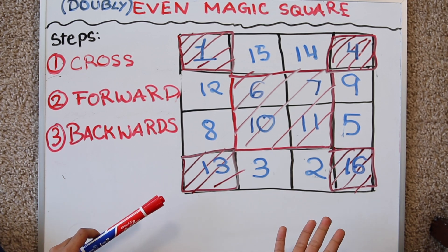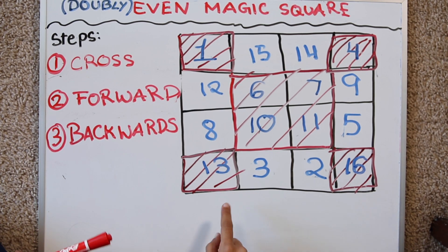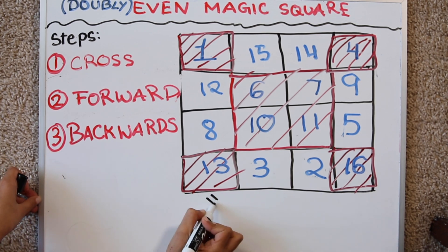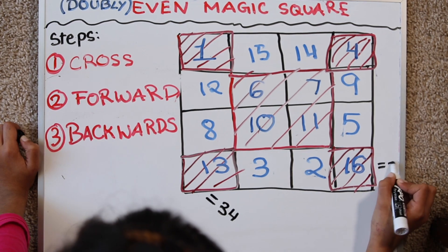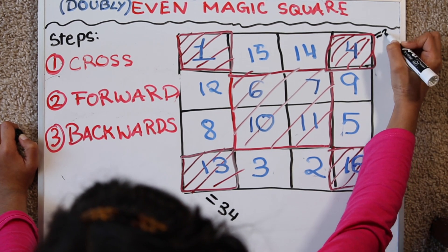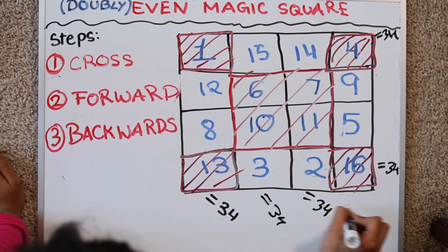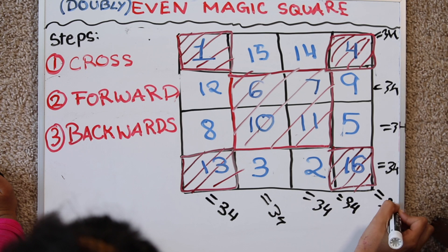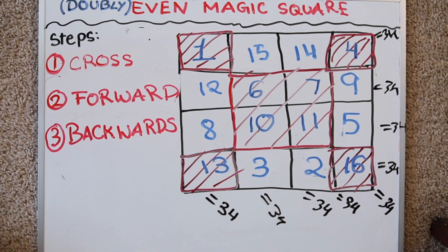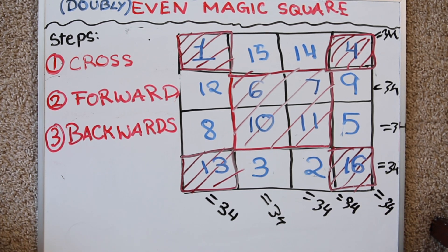But now let's see if it adds up to the same number. I calculated this would be 34. This row would be 34. And this diagonal would be 34. This diagonal would be also 34. So that's how you do a doubly even magic square.